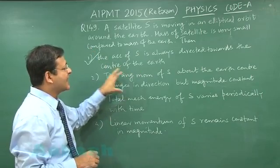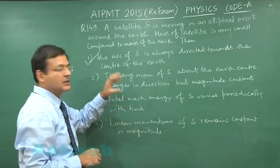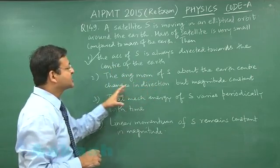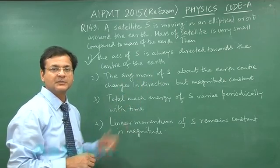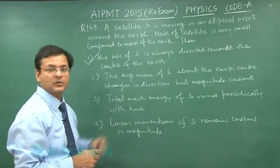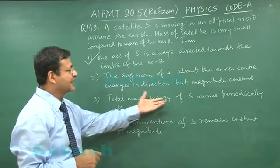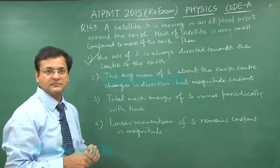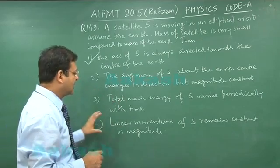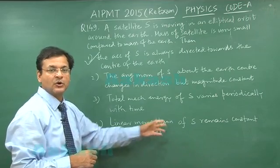The second statement is saying that the angular momentum of S about the earth center changes in direction. This is a wrong statement - angular momentum is constant in direction and magnitude as well. Total mechanical energy is saying that it is varying - no, it is not varying, it is constant. And linear momentum, it is saying that it is remaining constant - that is wrong.